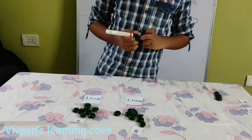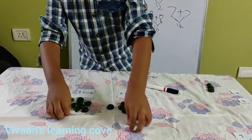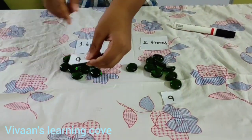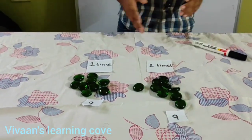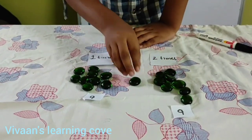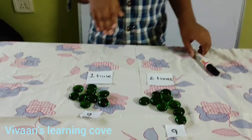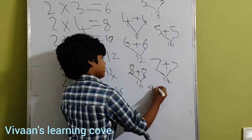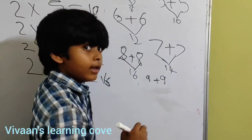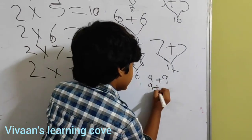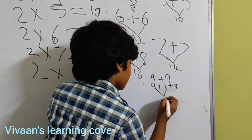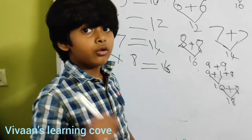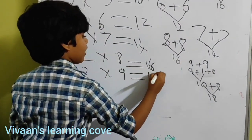Now I am going to take 9 pebbles 1 time and 9 pebbles 2 times. We write it as 9 plus 9. I split it as 9 plus 1 plus 8: 9 plus 1 equal to 10, then 10 plus 8 equal to 18. So 2 times 9 equal to 18.